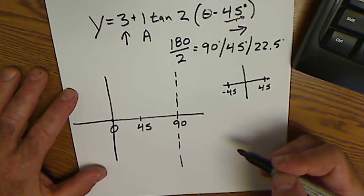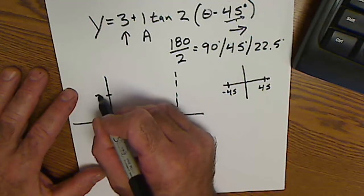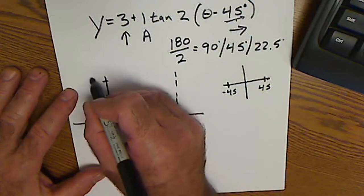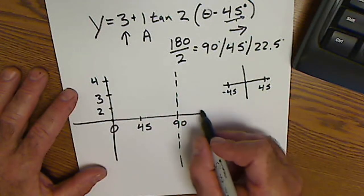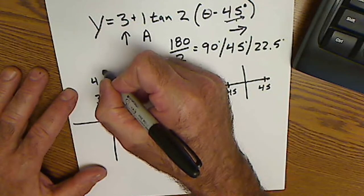Now I need to label my y-axis. From 3, I go up 1 to 4, down 1 to 2. This is theta, this is y.